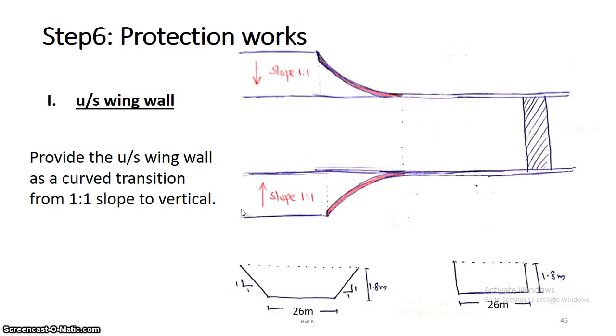Step 6: Protection Works. In the protection works, there are upstream and downstream wing walls, bed pitching, curtain wall, and side pitching.